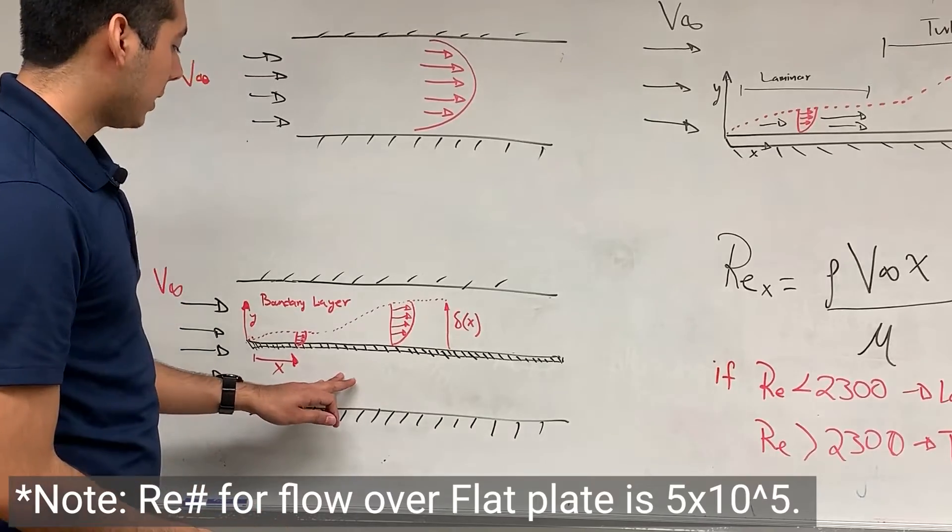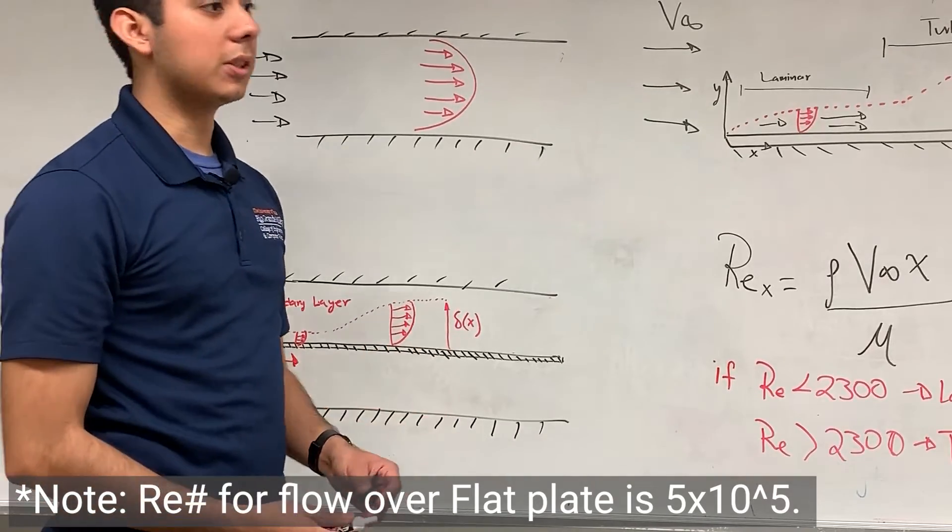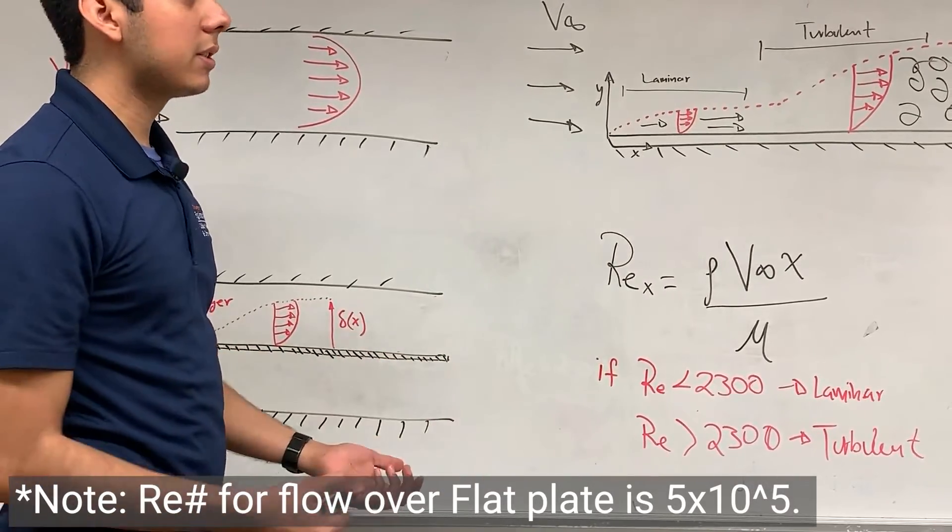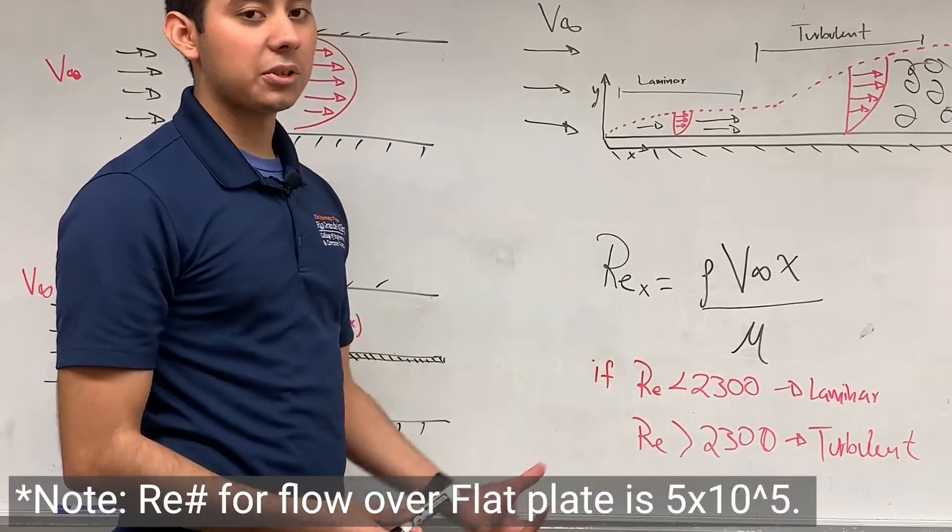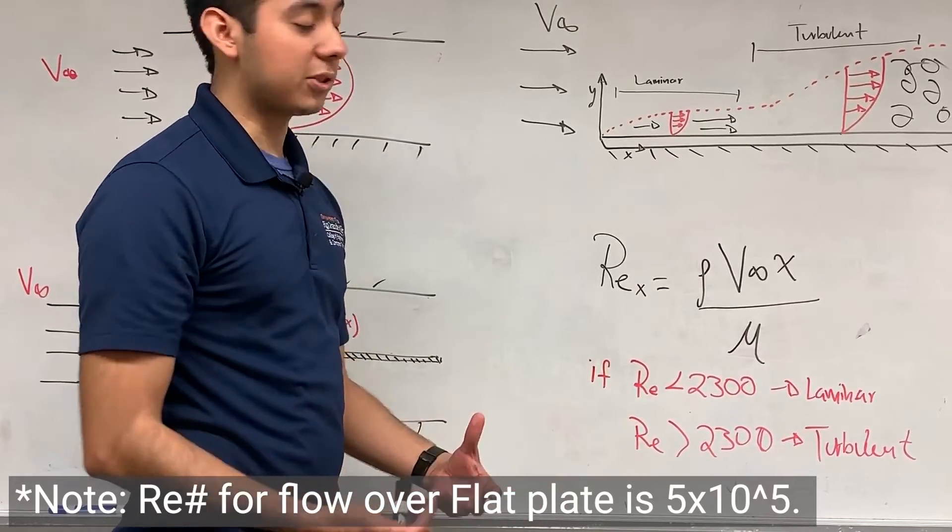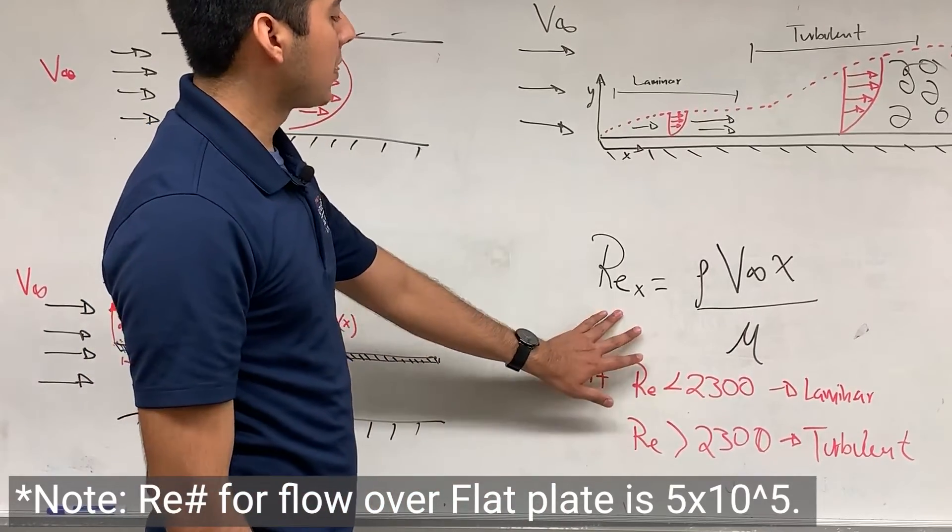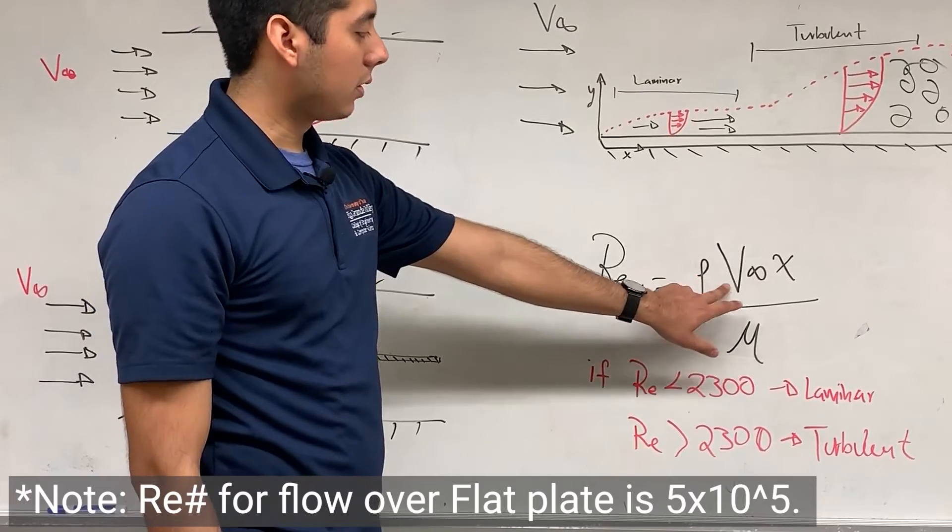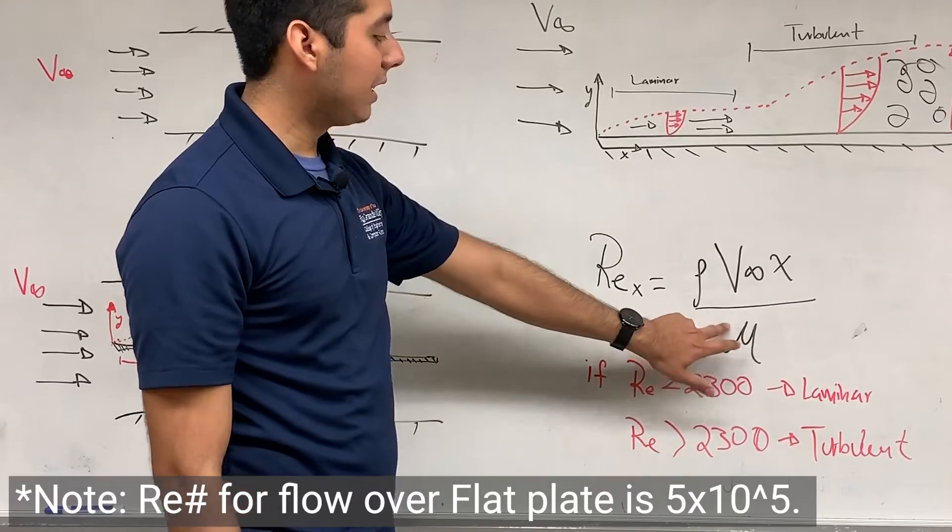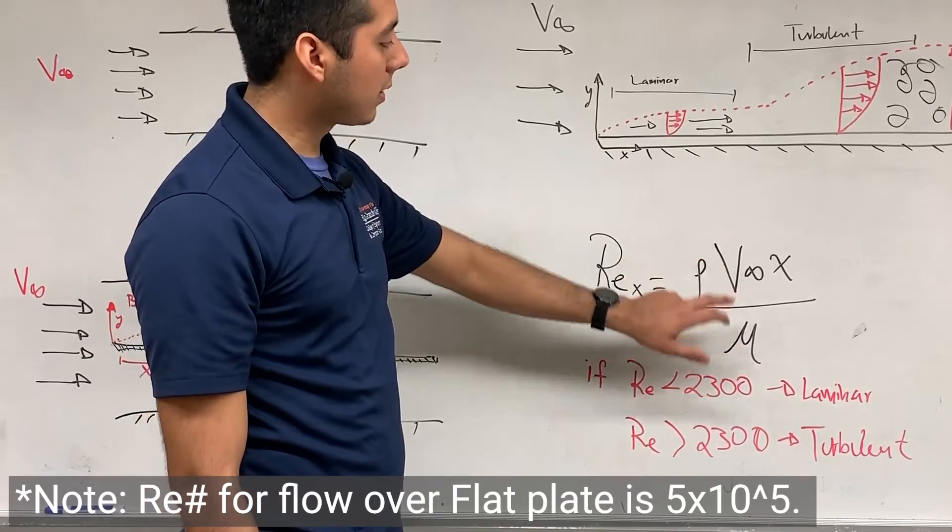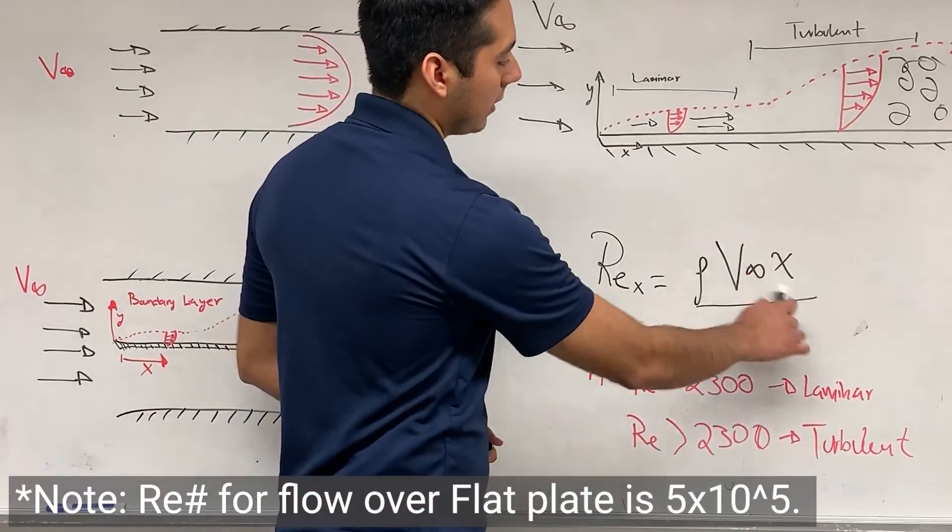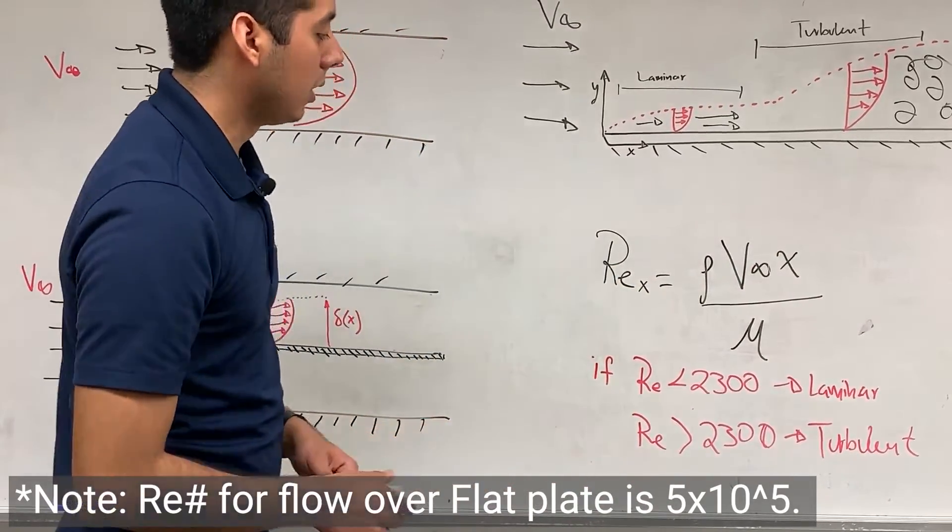The way to calculate that boundary layer is by something we call the Reynolds number. This Reynolds number is just a unitless number that tells us the characteristic of the fluid, whether it is flowing smoothly or turbulent. In the Reynolds number, we have the density of the fluid, the velocity of the fluid, the length where we're testing, and the viscosity of the fluid. All of these are pretty much constants. The only one that you guys have to get is the length—this is one of the variables that we need to look for.